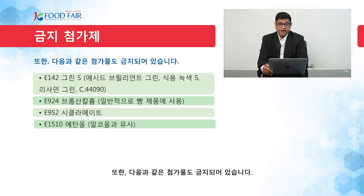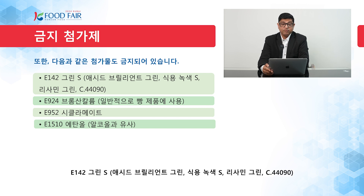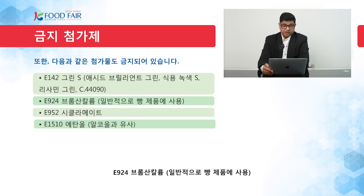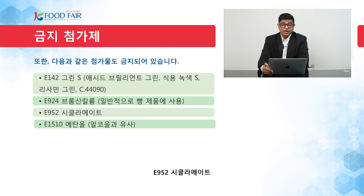There are more banned additives: E142 green S (acid brilliant green, C.I. 44090); E924 potassium bromate, normally used in bread products; E952 cyclamate; and E1510 ethanol, which is similar to alcohol.